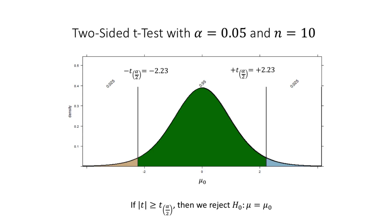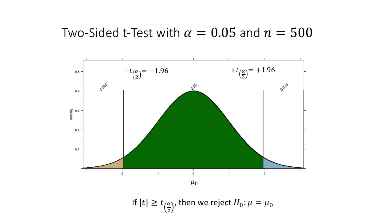For a sample size of 10, those critical values are a little bit lower — roughly negative 2.2 and positive 2.2. If we have a sample size of 500, on the t-distribution, the critical values are similar to those of the standard normal distribution, with a rounding error. So with a larger sample size, the t-distribution approximates the standard normal distribution, and our t-critical values are negative 1.96 and positive 1.96, roughly.